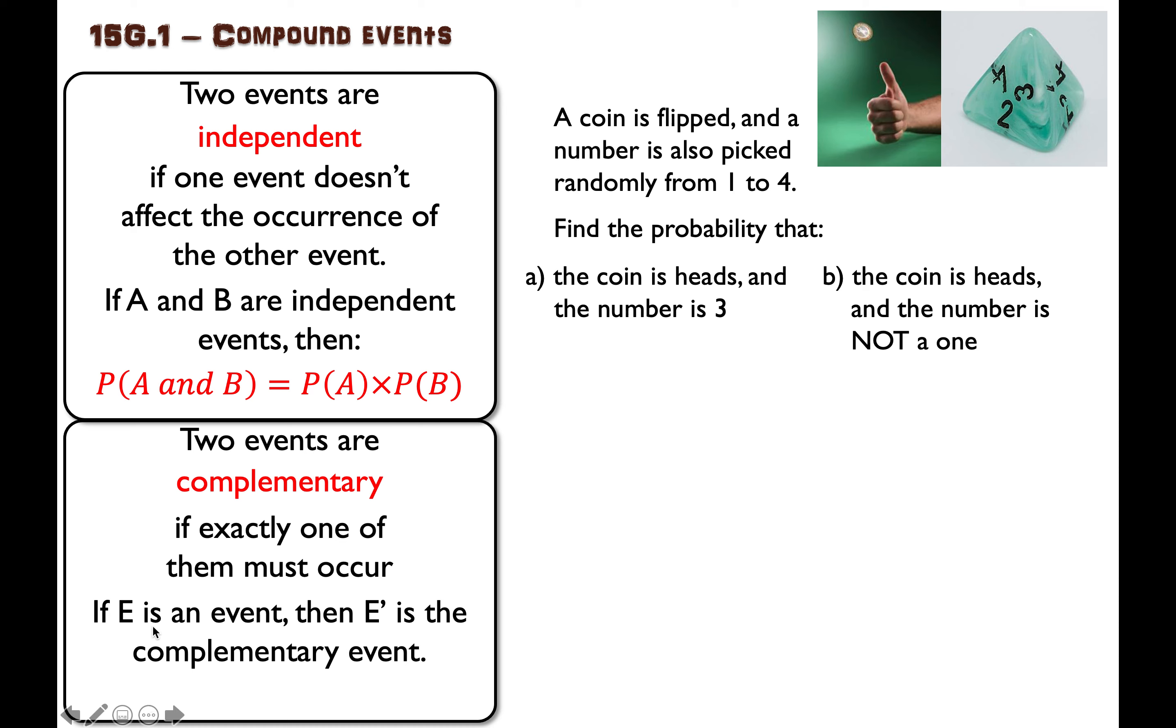If we have an event called E, then we write E with a little dash on it. And that is the complementary event, sort of the opposite. It is also true that the probability of an event plus the probability of the complementary event equals one.